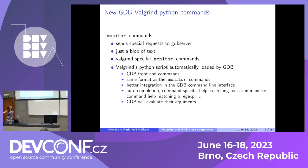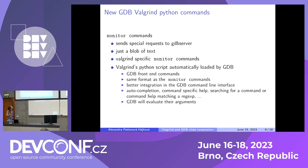Monitor commands work via a special request that GDB sends to the GDB server, and the GDB server responds to them. There is no further integration — it's just text. Valgrind has a GDB server embedded in it, and Valgrind has a specific set of its own monitor commands.